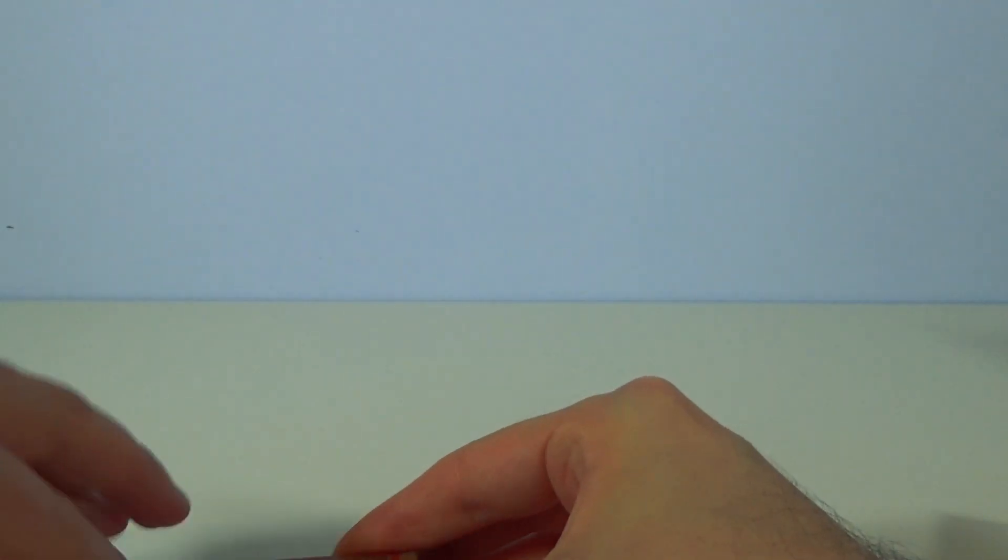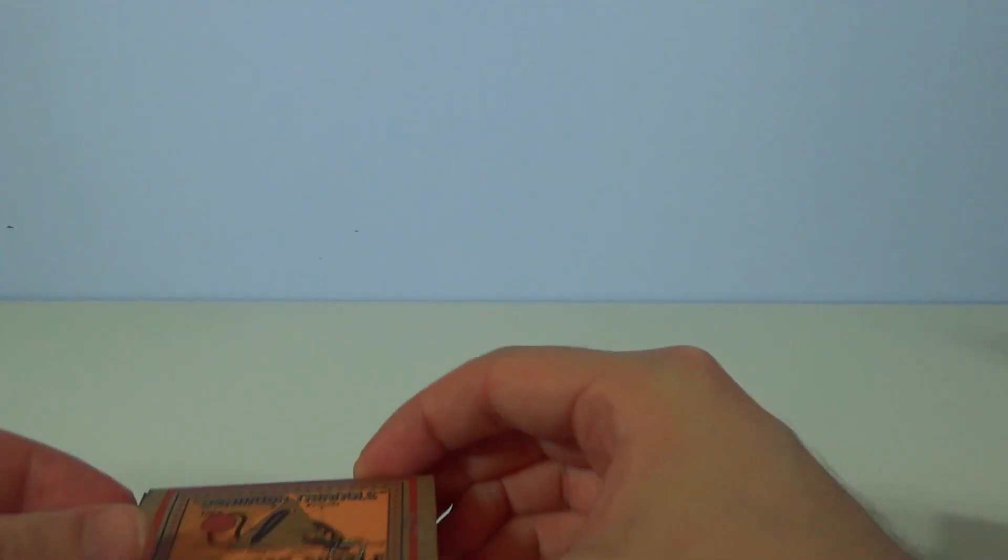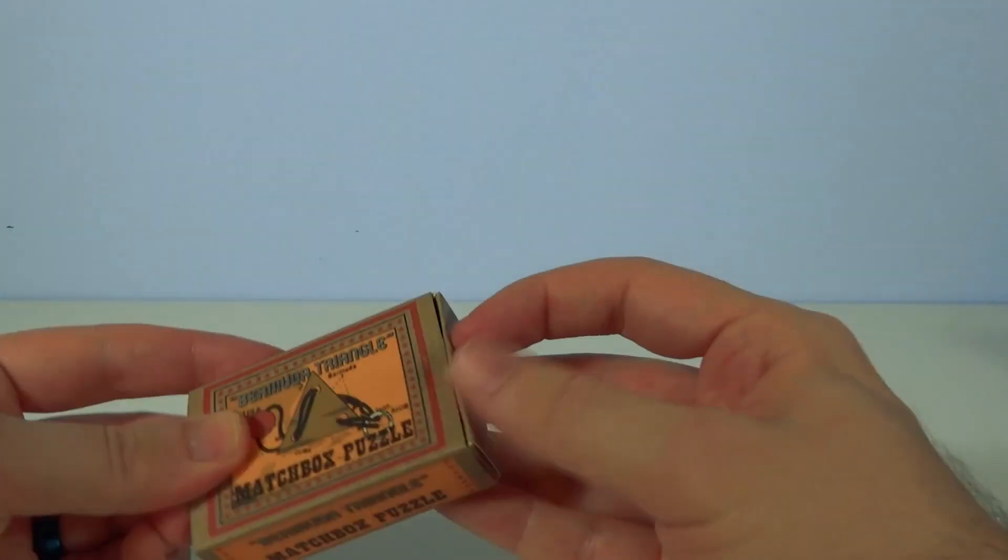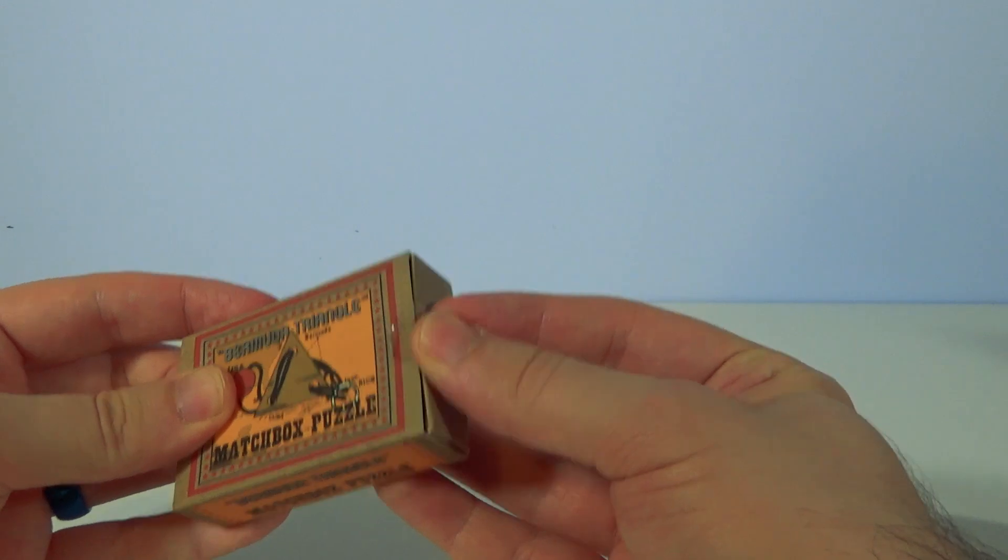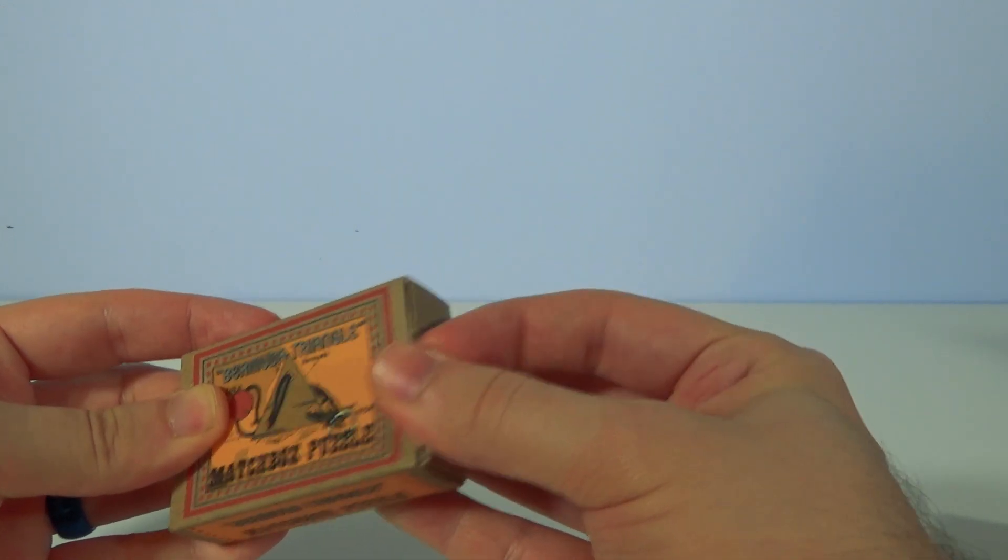We'll see what's inside those. We'll get to the Smart Egg. I'm building tension or something. Alright, let's have a look what's inside this. This one's apparently called the Bermuda Triangle Matchbox Puzzle. The actual main puzzle of this is to try and get the fucking sellotape off without ripping the lovely-looking little matchbox.